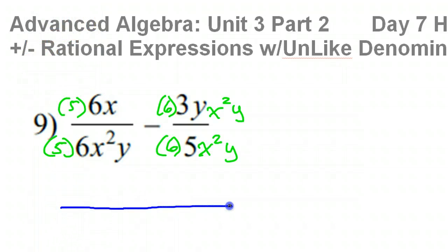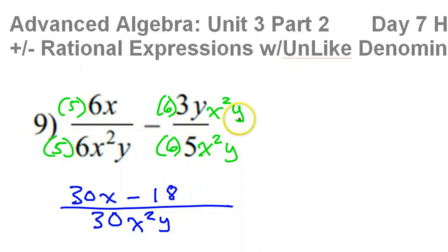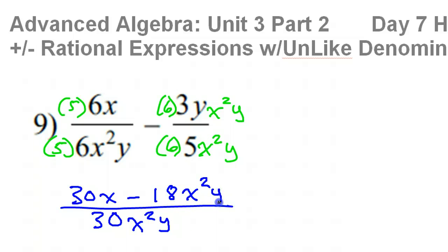Now that I have like denominators, I can put them together over 30x squared y. In the numerator here, I have 30x minus 18. I have a y and another y, so that's y squared — going alphabetical order, that'll be x squared y squared.